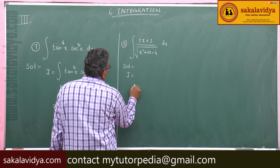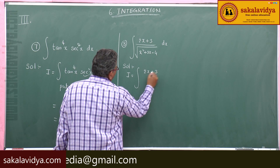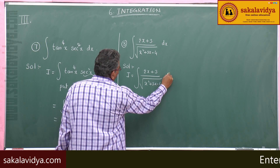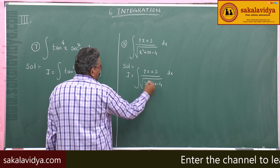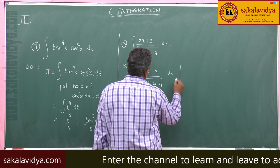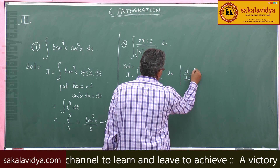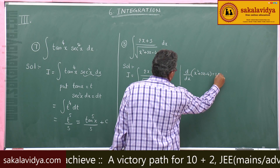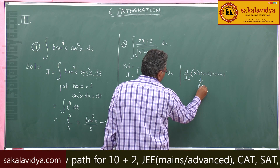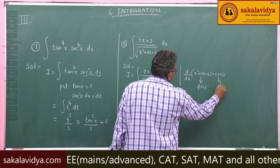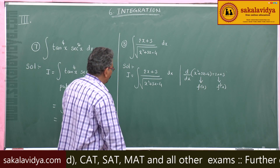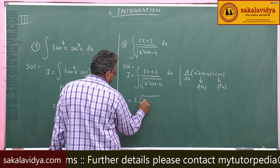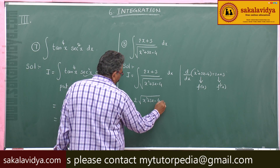I equals integral of (2x + 3) divided by root of (x² + 3x − 4) dx. This numerator is the derivative of the expression under the root. We know that d/dx of (x² + 3x − 4) equals 2x + 3. This is f(x) and 2x + 3 is its differential coefficient f'(x). So this equals 2 root of (x² + 3x − 4) plus c.